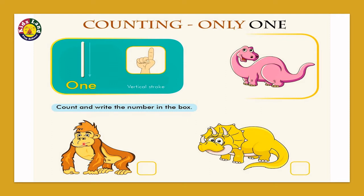Okay, next, going into the activity. We see some monkeys and dinosaurs here. Count and write the number in the box. Let's start with the monkey here. How many monkeys are there, kids? It's only one monkey. And how do we write one? One monkey. Correct.